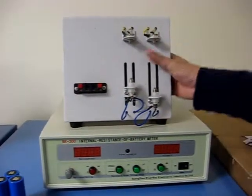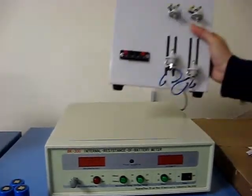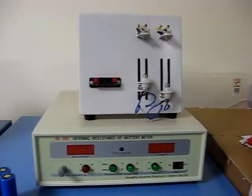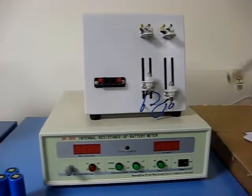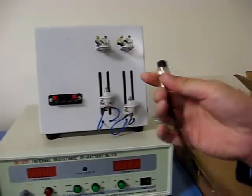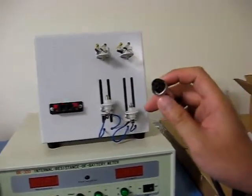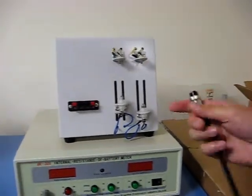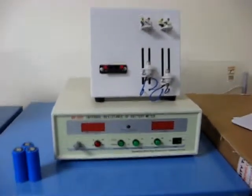First thing you want to do is have this little add-on module hooked up to the machine. It's pretty simple to do. It's already hooked up, so I'm not going to take it off, I'm just going to show you. It's just this cannon plug you screw in on the back of it. Make sure it's tight and hooked up correctly.